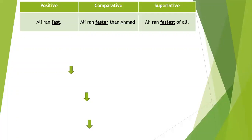Let's see the difference between positive, comparative, and superlative degree. As you can see in the table, positive degree example: 'Ali ran fast.' Here 'ran' is the verb and 'fast' is an adverb modifying the verb. We are talking only about Ali, so that is why we have used the positive degree.